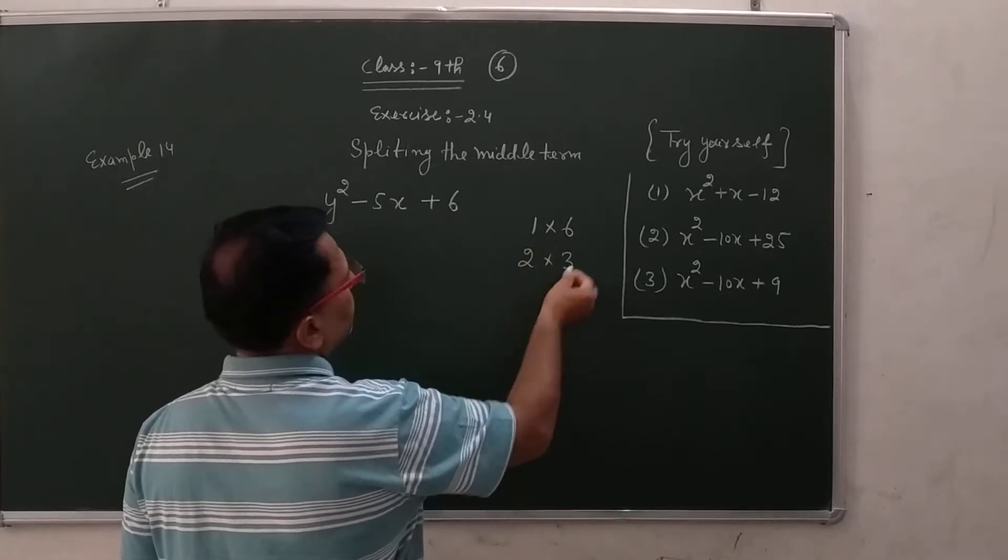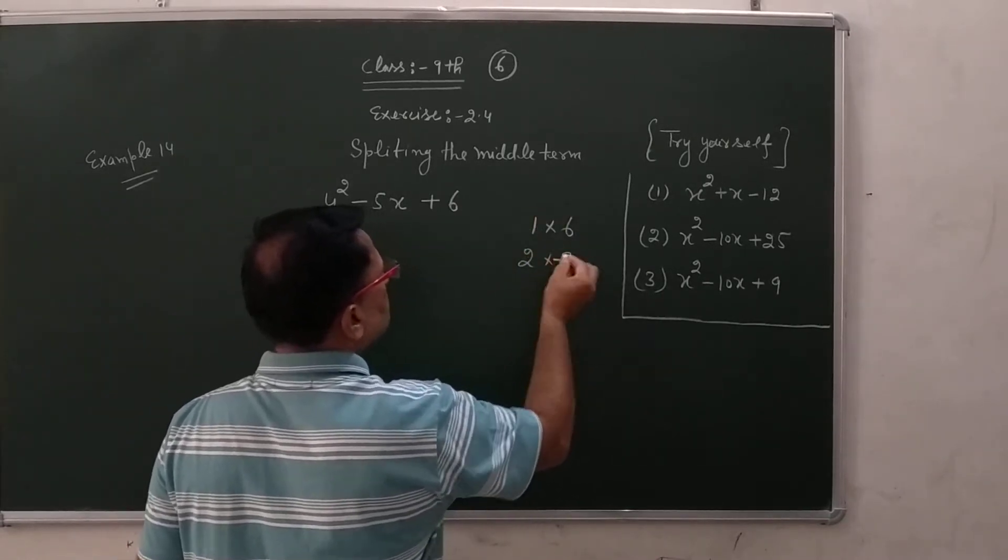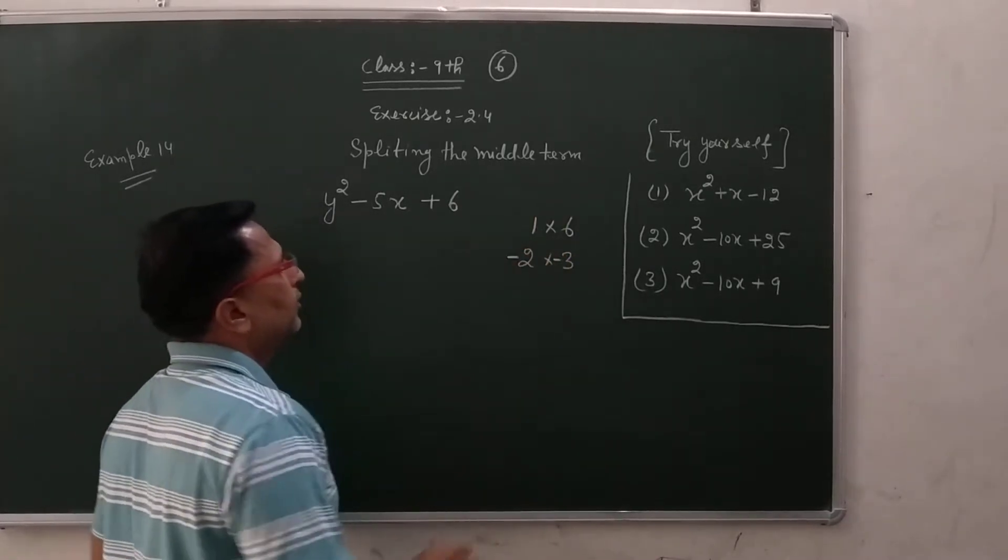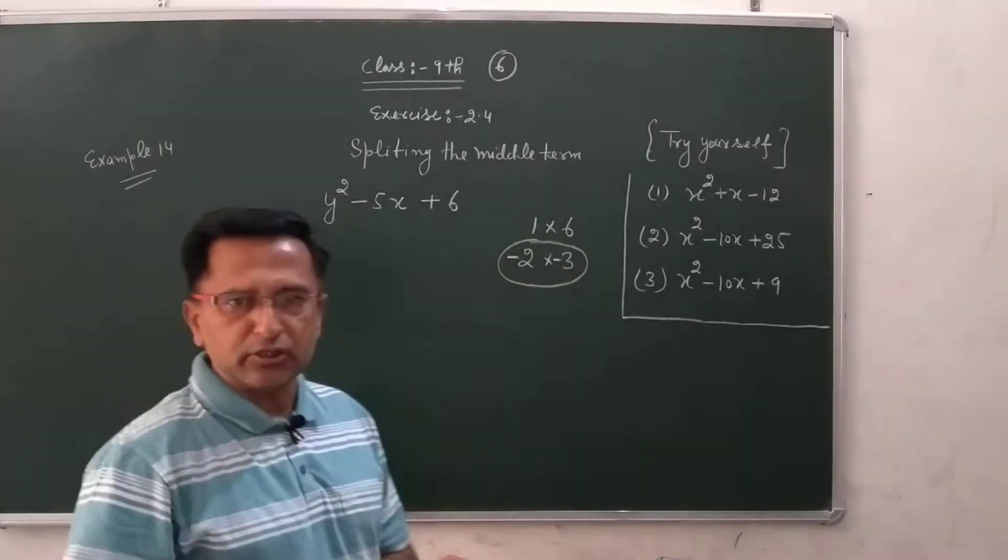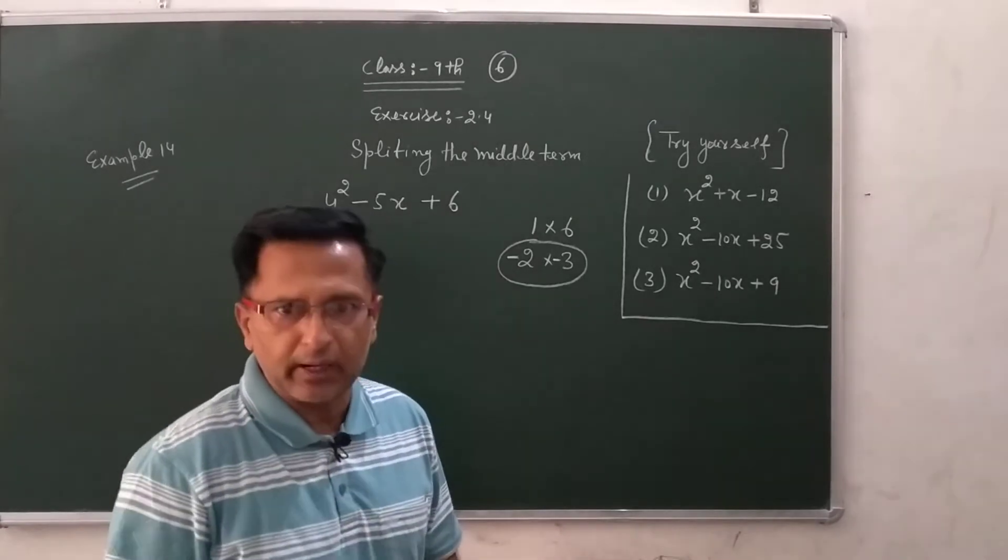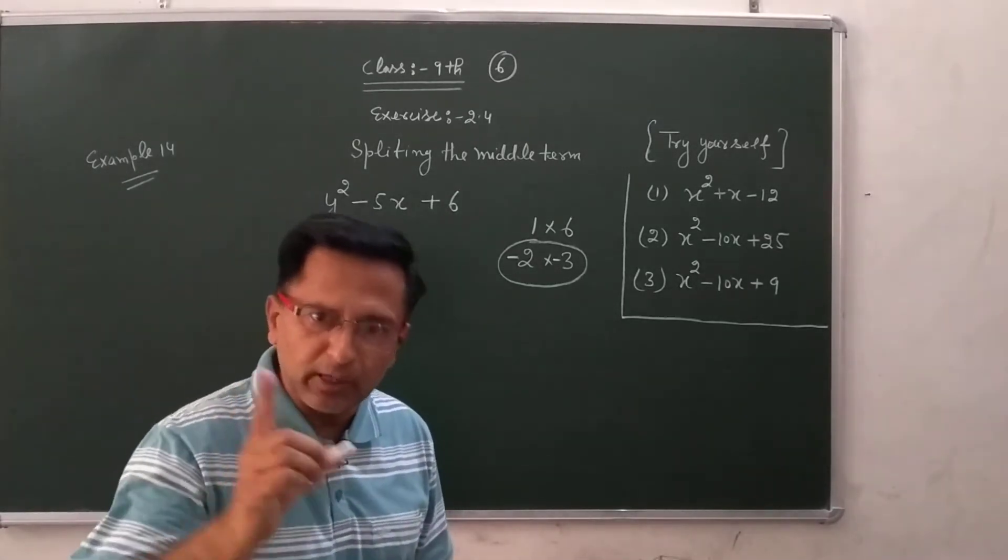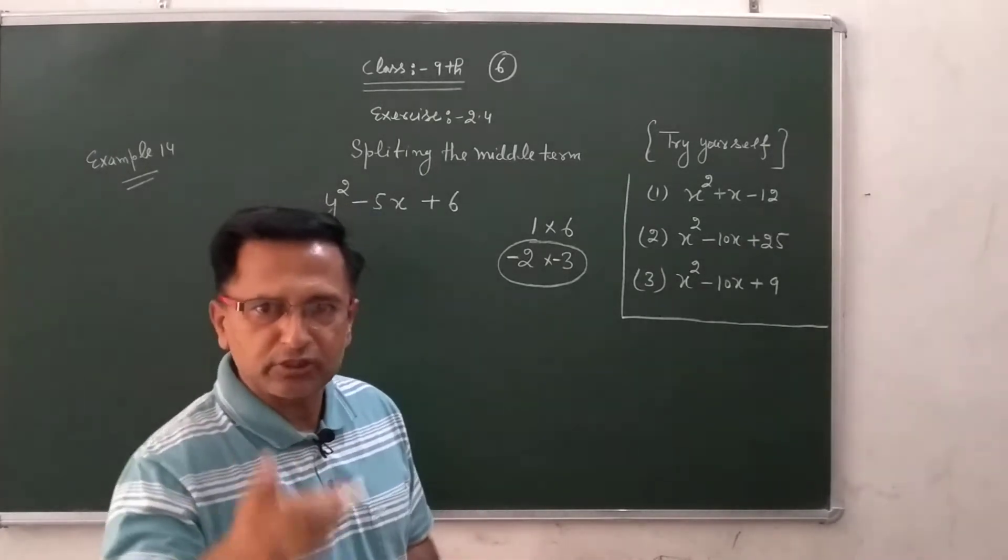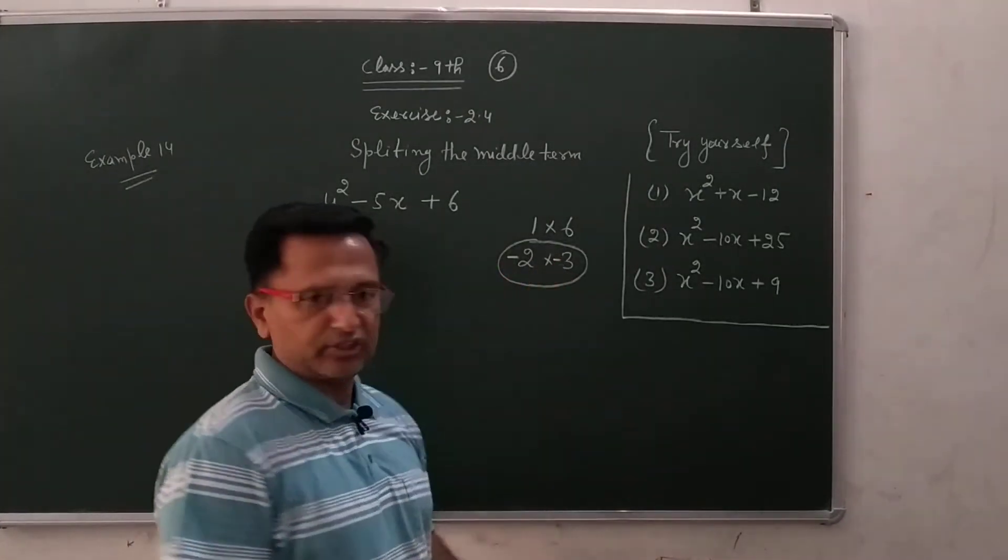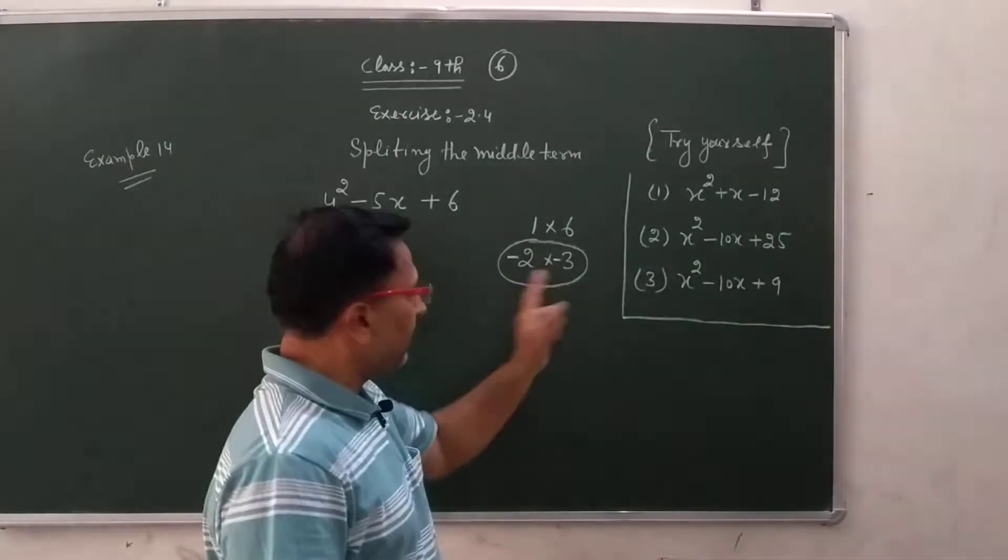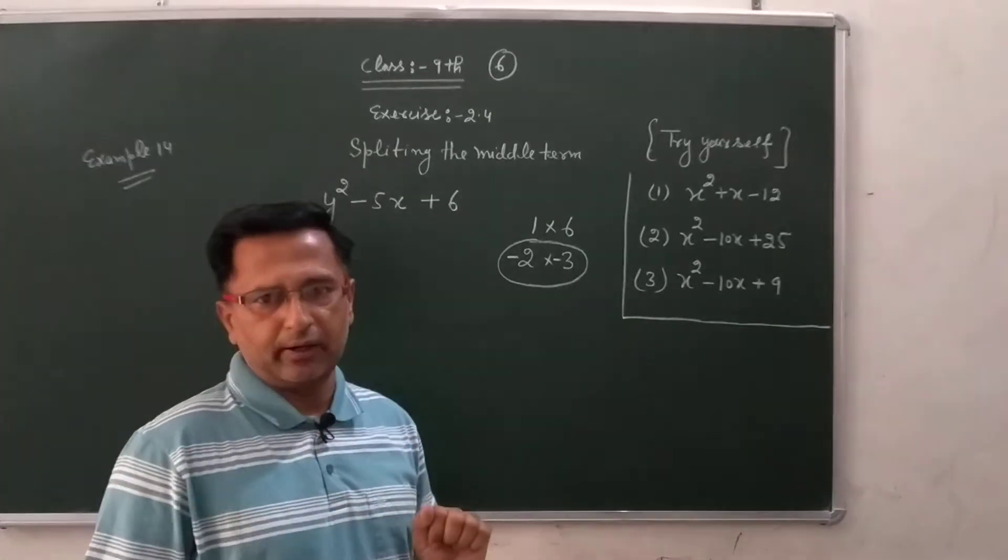To minus five kahan se aaye? Yeh minus ka three or yeh minus ka two. Yeh do hamare hoge. Minus two or minus three ko add karenga, to minus five aayega. And minus two or minus three ki multiply karenga, to plus ka six aayega. Because minus into minus plus ho. Three is a six. And minus two and minus three ko add karenga, to minus five aayega.